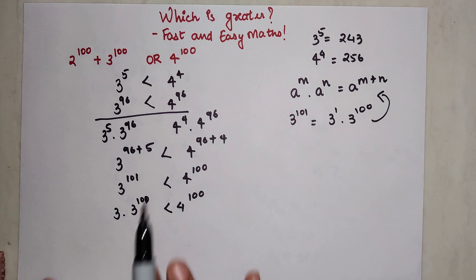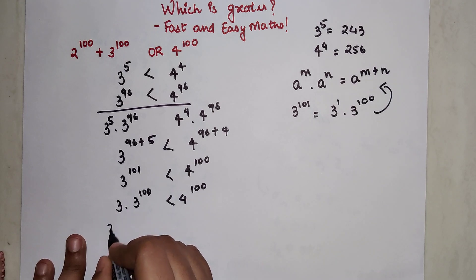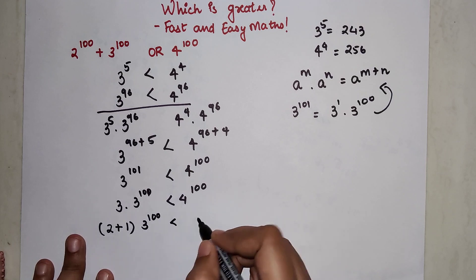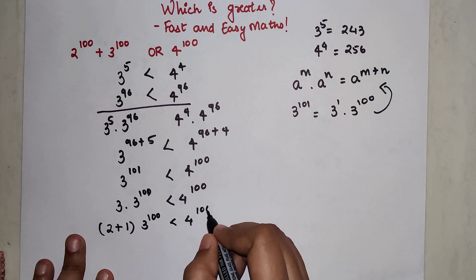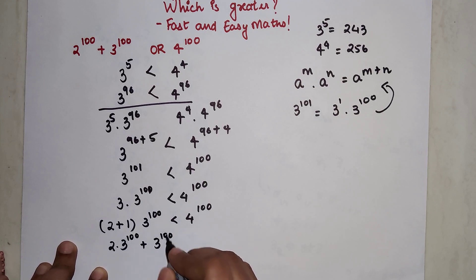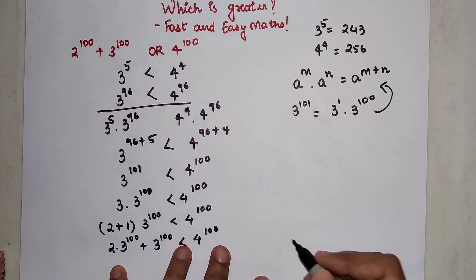I have a 2 in the picture in my question. Whenever you are solving something like this, you always have to keep your question in mind. So let's write this 3 as (2+1) × 3^100, which is still going to be less than 4^100. Now opening this bracket, we get 2 × 3^100 + 3^100, which is less than 4^100.